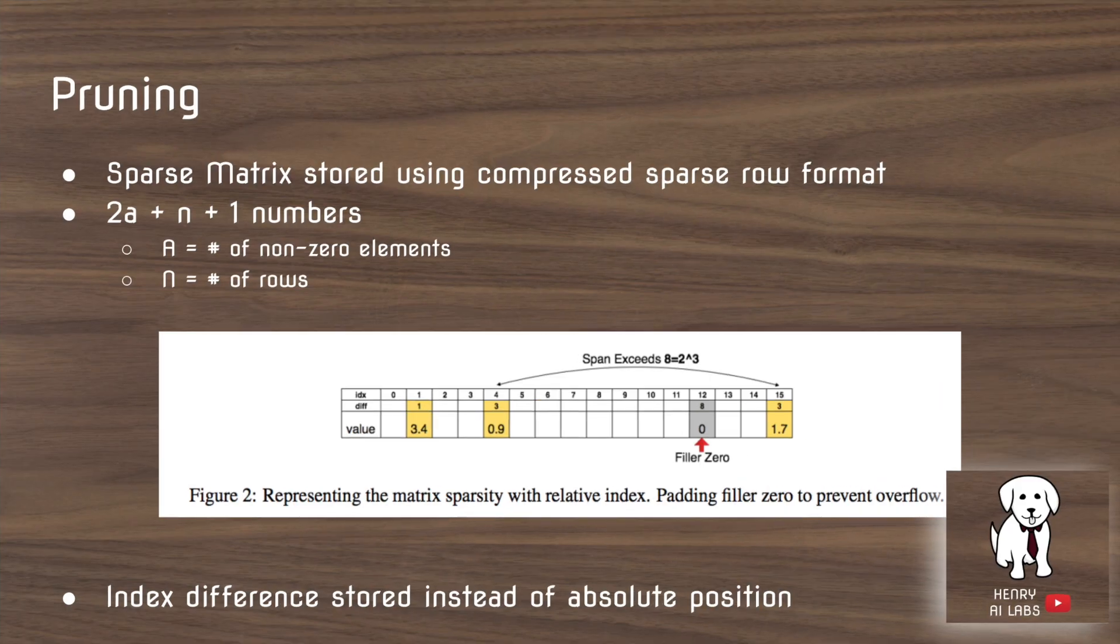After they prune the weights, they store it in this compressed sparse row format in order to save space. And what this does is it indexes the index difference between the weights that haven't been masked out.